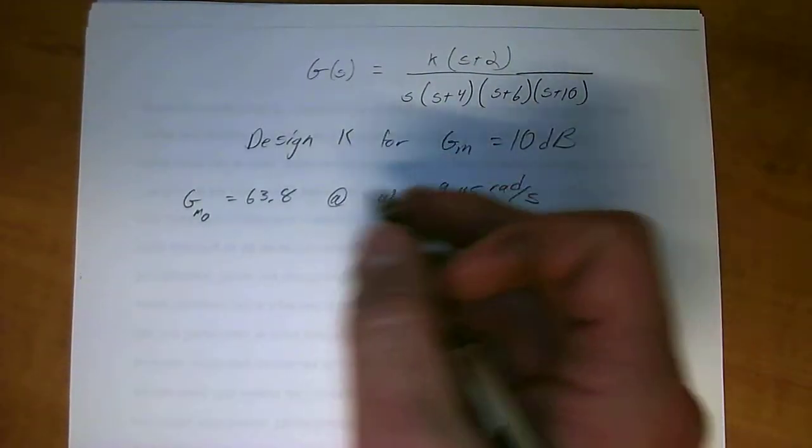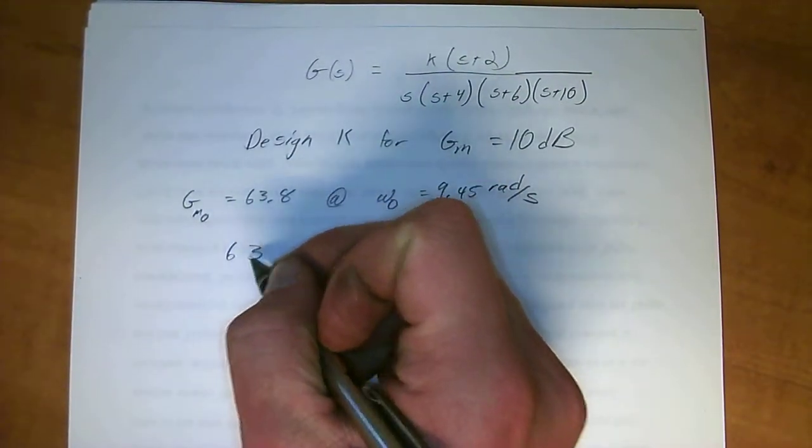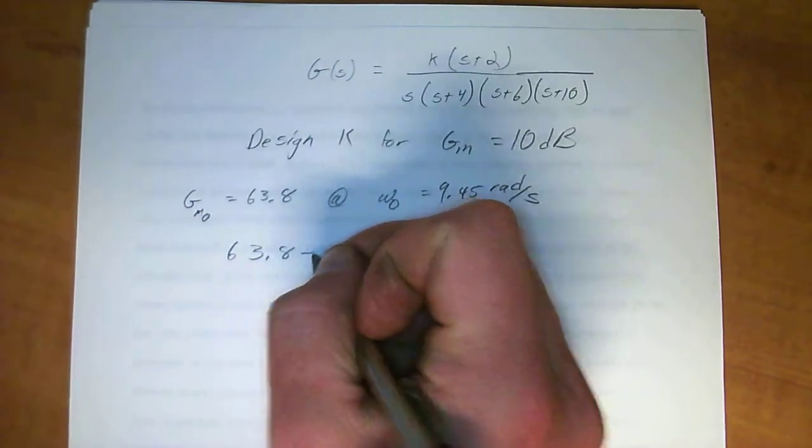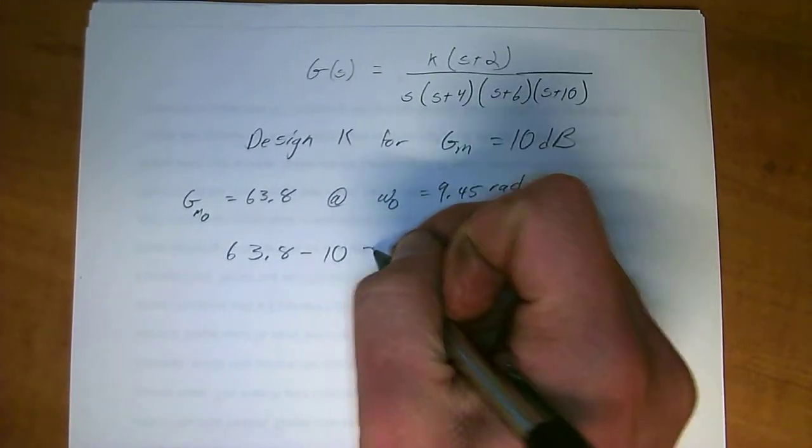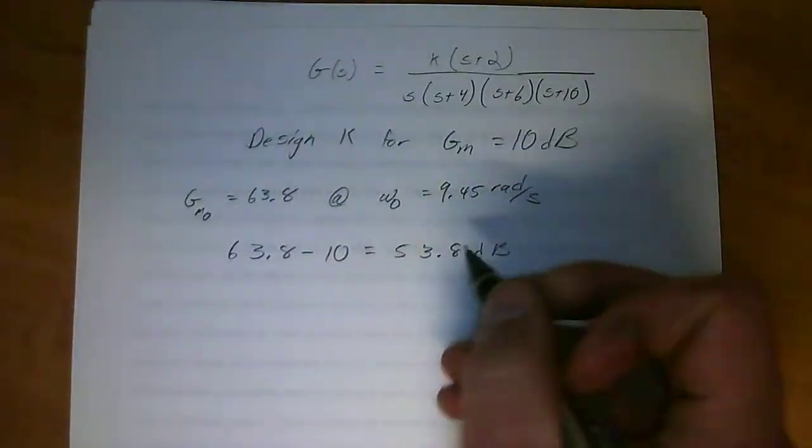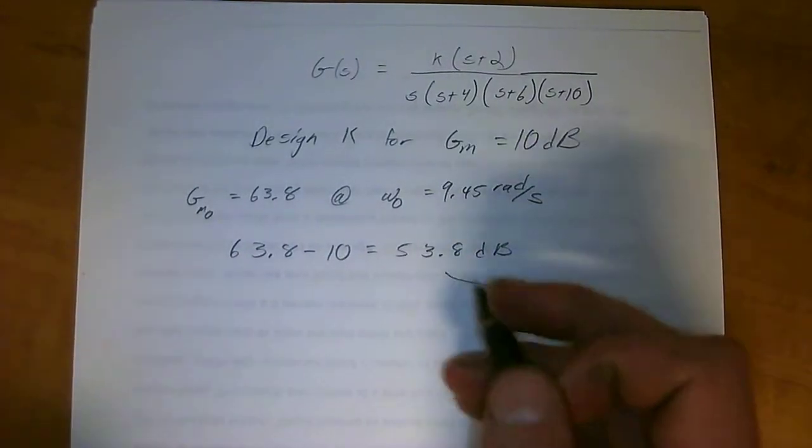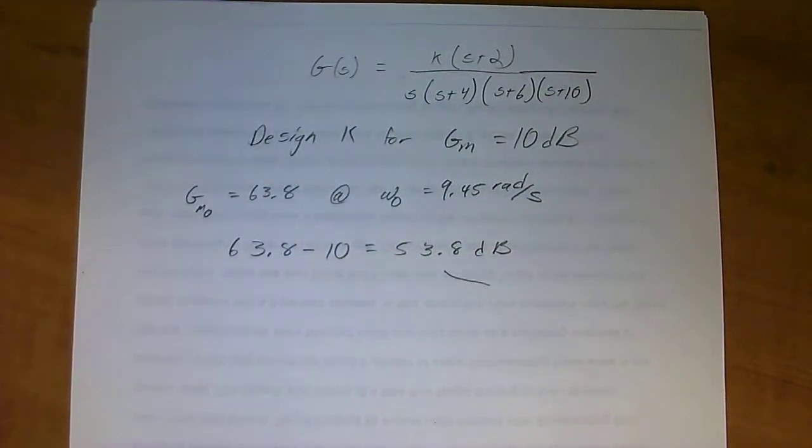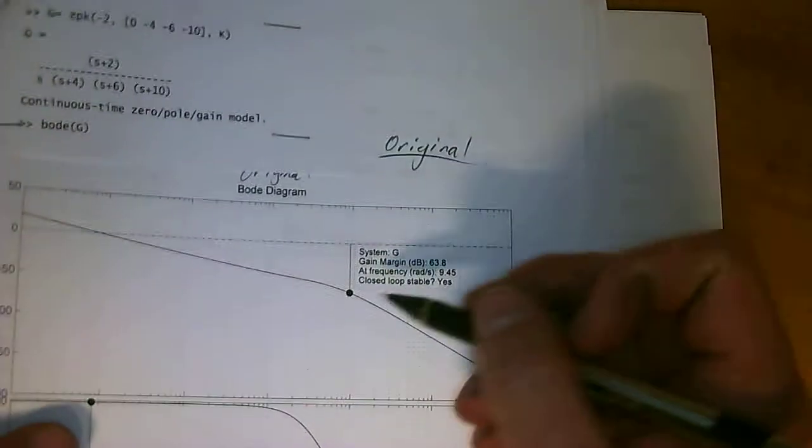So if we want a GM of 10, then all you have to do is 63.8 minus 10, which equals 53.8 dB. This is basically the distance that you have to move these graphs up in order to get that gain margin.